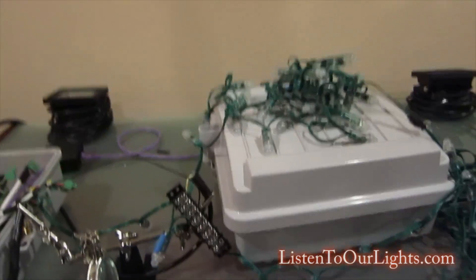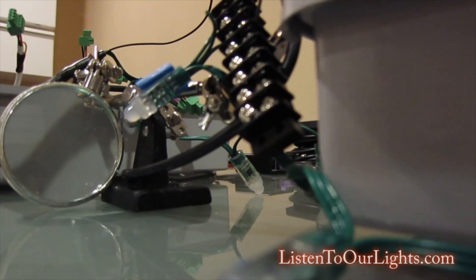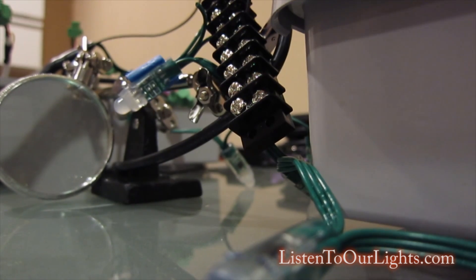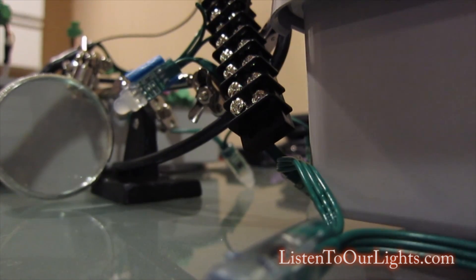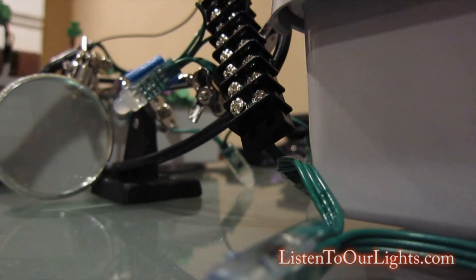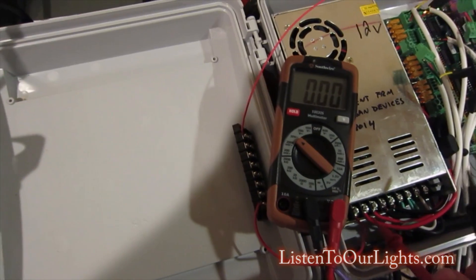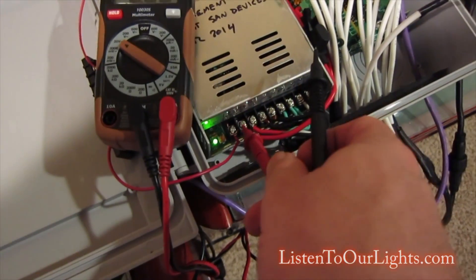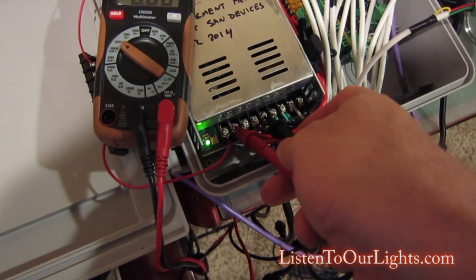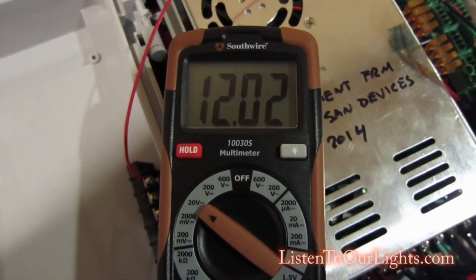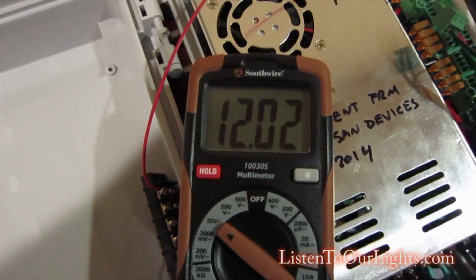So now with this, I can take a measurement and see how much voltage I'm getting. Let me get my meter. Okay, so there's my positive. And so right there, I'm getting 12 volts.